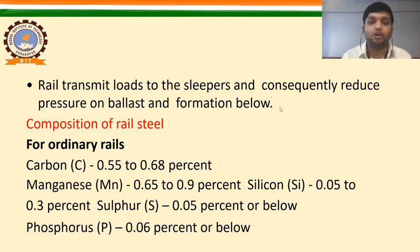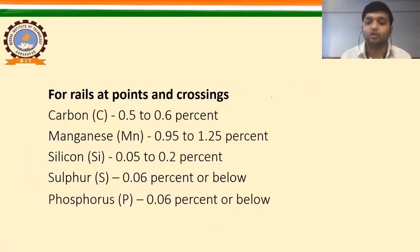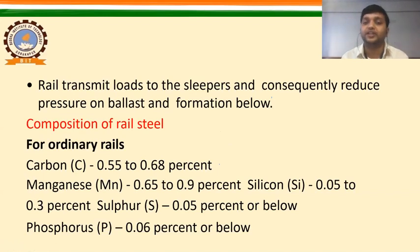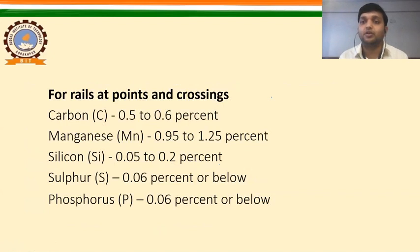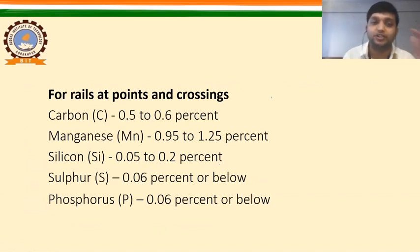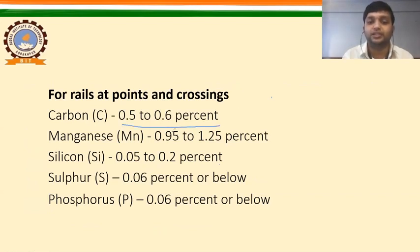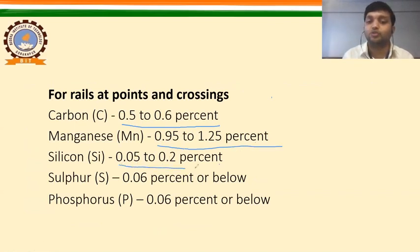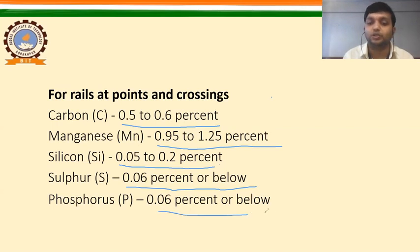Next is the composition for rails at points and crossings. The different composition is: carbon content 0.5 to 0.6%, manganese 0.95 to 1.25%, silicon 0.05 to 0.2%, sulfur 0.06% or below, and phosphorus 0.06% or below. The materials are the same, but their percentages vary. So these are the two types of rail steel compositions: ordinary rails and rails at points and crossings.